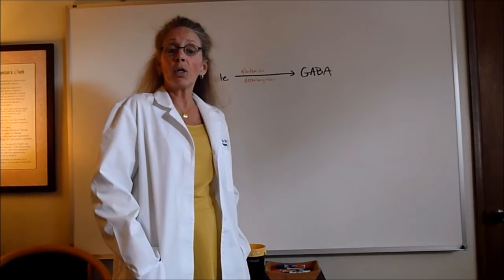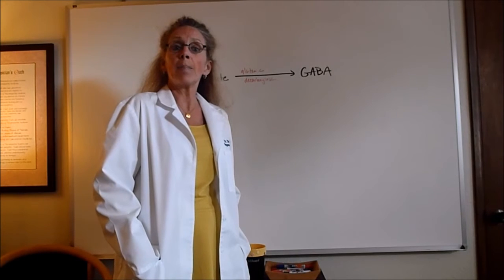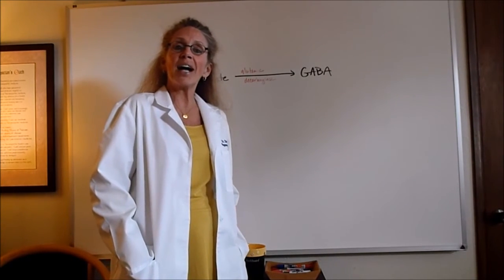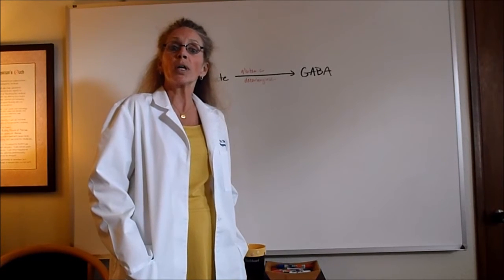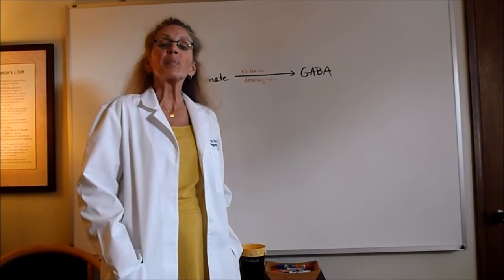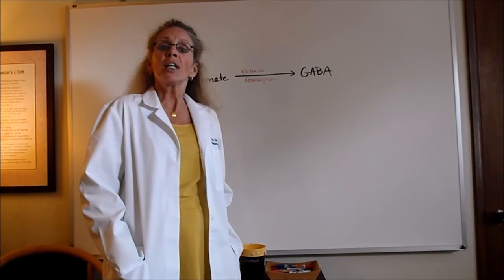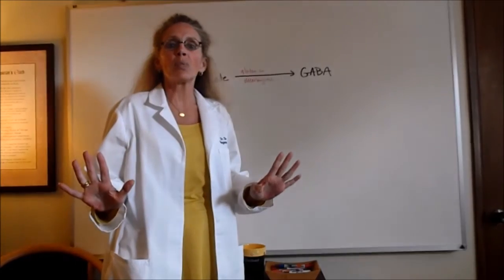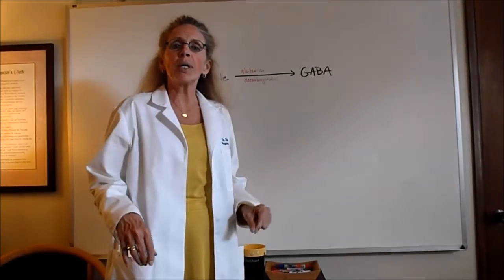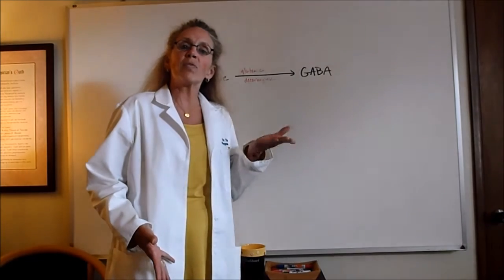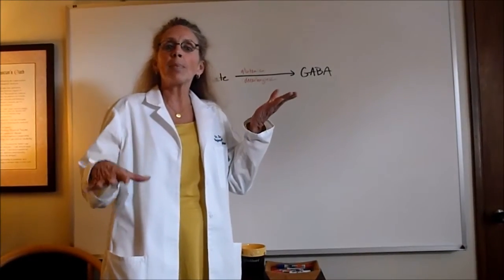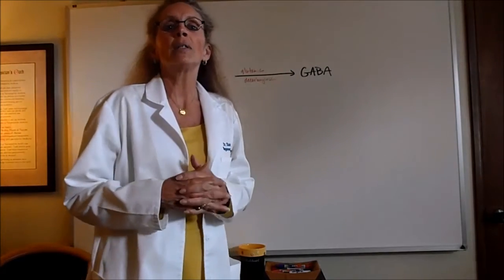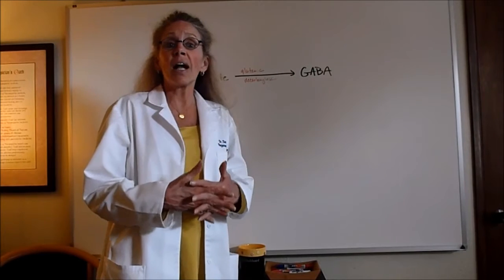The other neurotransmitter I'd like to talk to you today about is GABA, gamma amino butyric acid. GABA is a neurotransmitter that is responsible for inhibition in the brain. You see a balance oftentimes among all of the neurotransmitters, but in particular between glutamate and GABA. Glutamate is very excitatory and GABA is inhibitory.